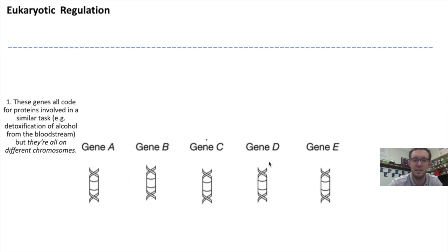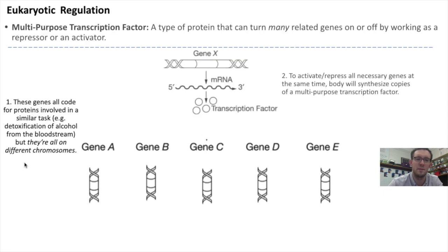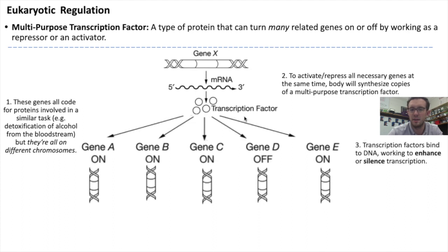For instance, let's say these five genes are all genes used for the detoxification of alcohol from the bloodstream. In order to access and activate all five of these genes at the same time, eukaryotic cells use something called a multi-purpose transcription factor — a type of protein that can turn on or turn off multiple related genes by working as either a repressor or an activator. This transcription factor is itself a protein transcribed and translated from a gene. When there's a large amount of alcohol in the bloodstream, this transcription factor can bind to DNA on all five of these genes, either working to enhance transcription or, in the case of gene D, to silence transcription.